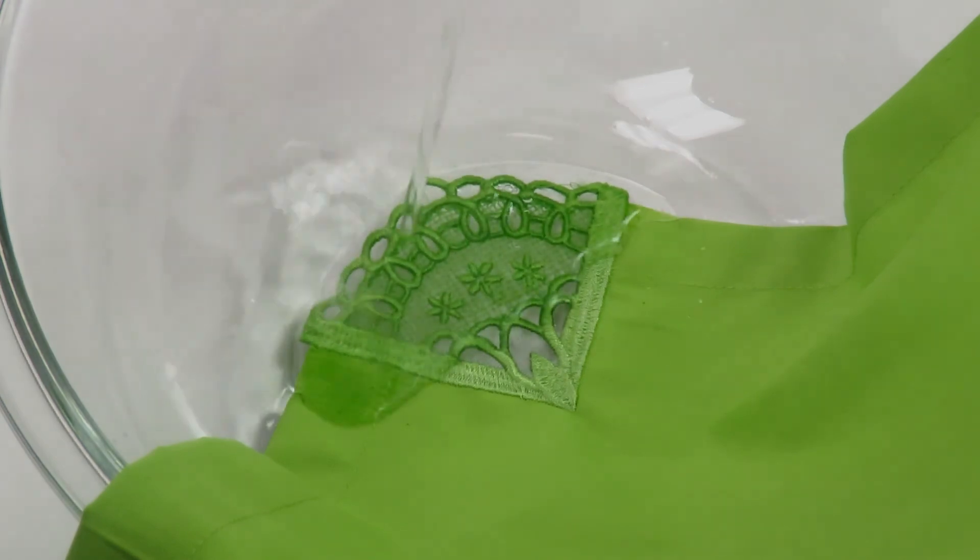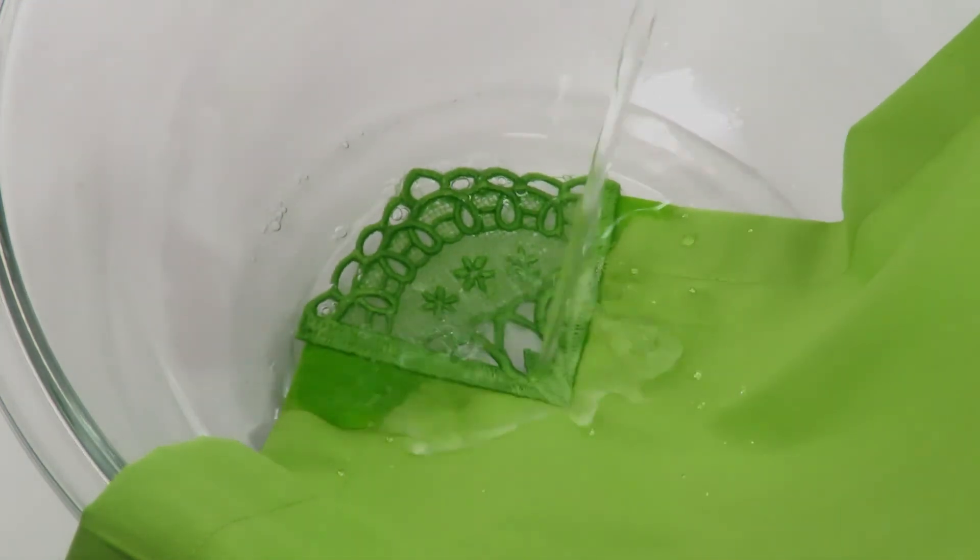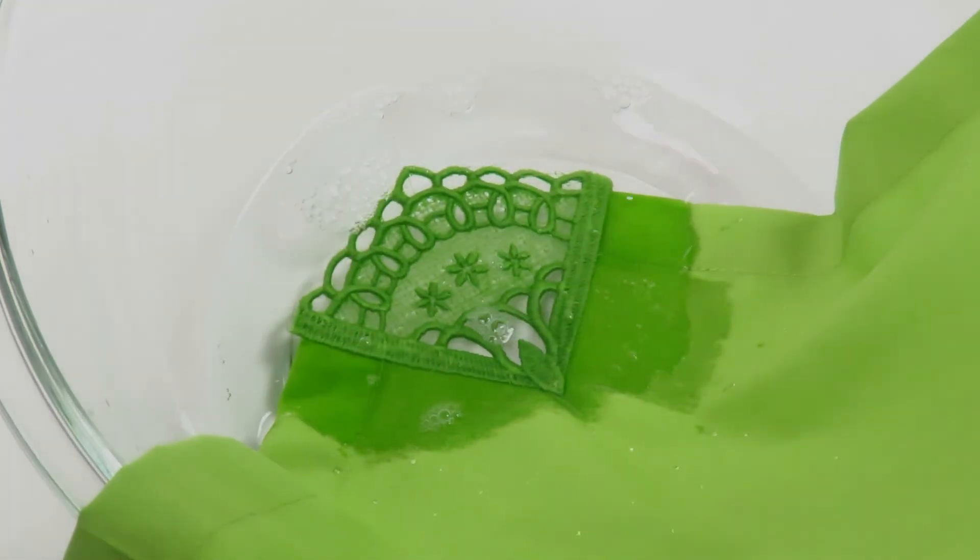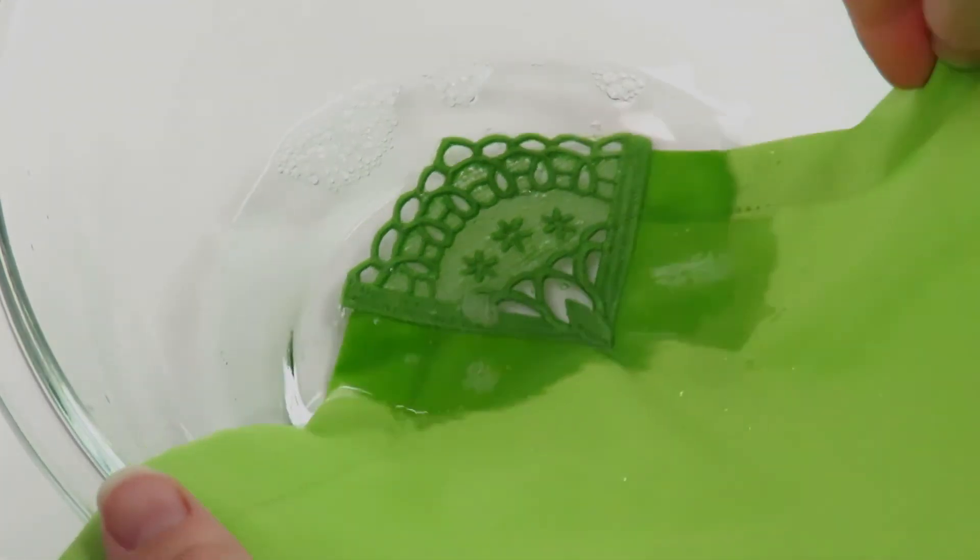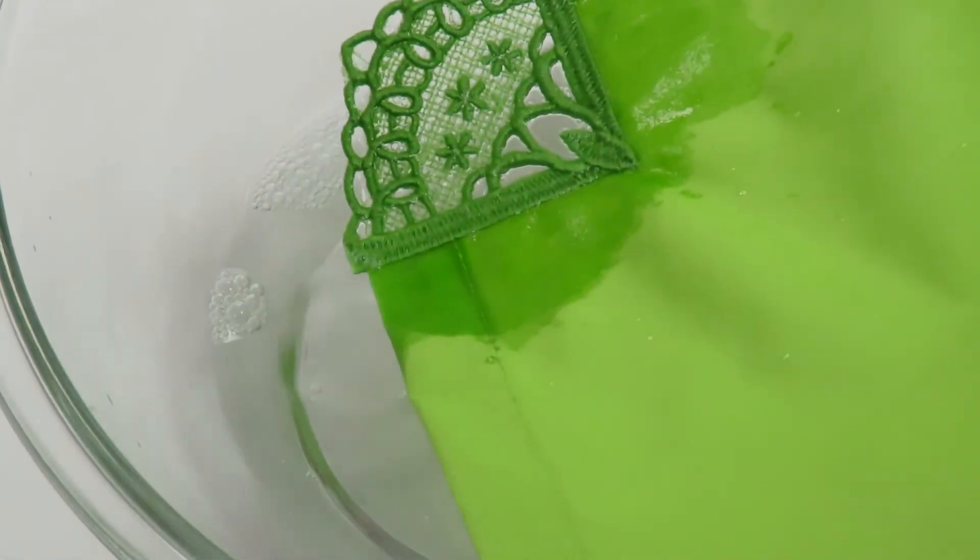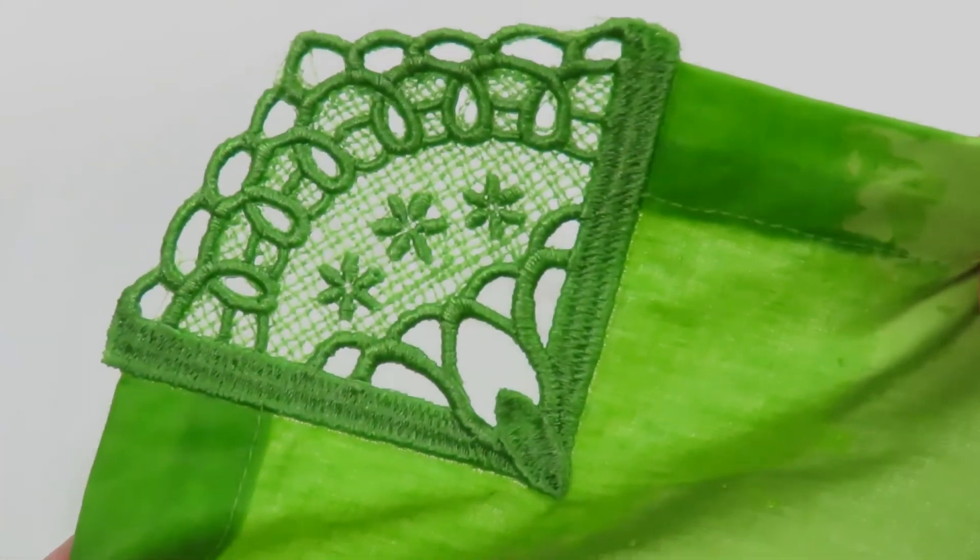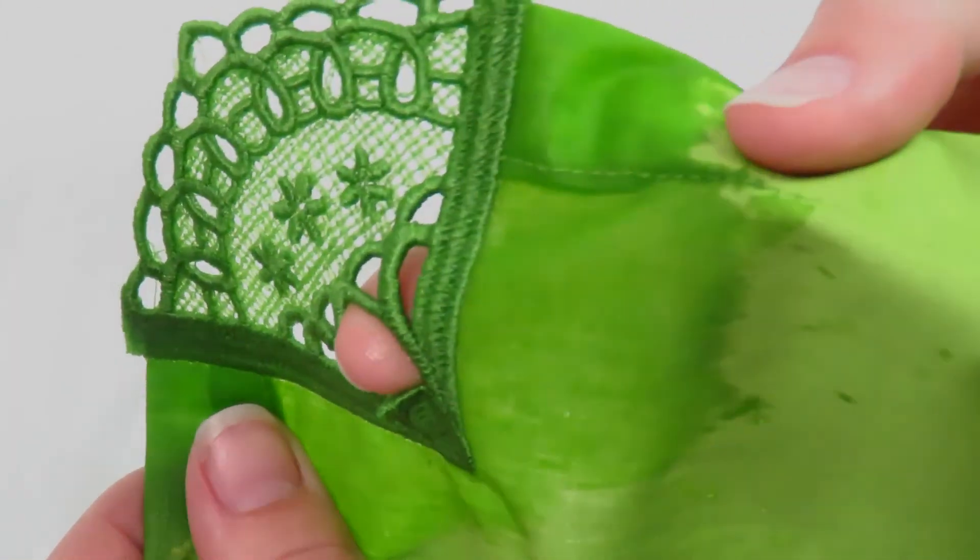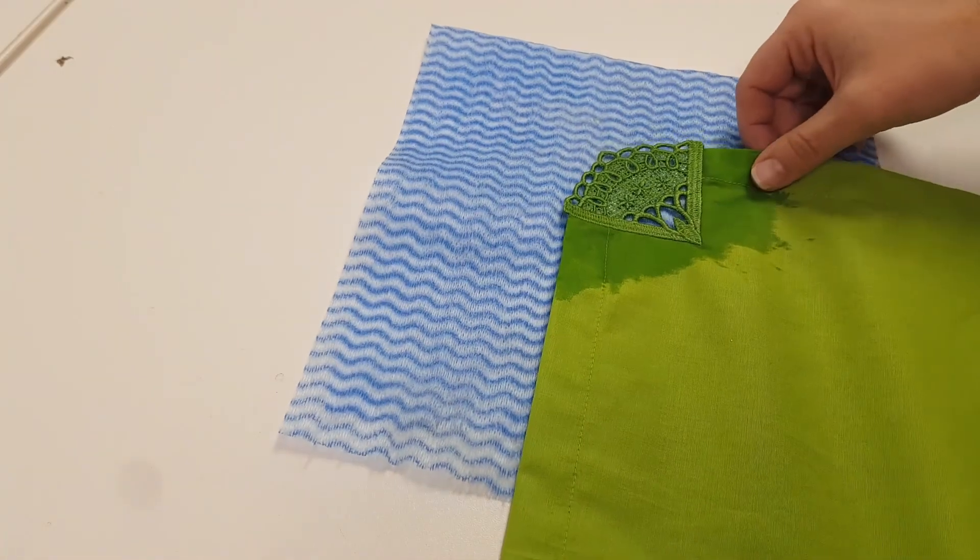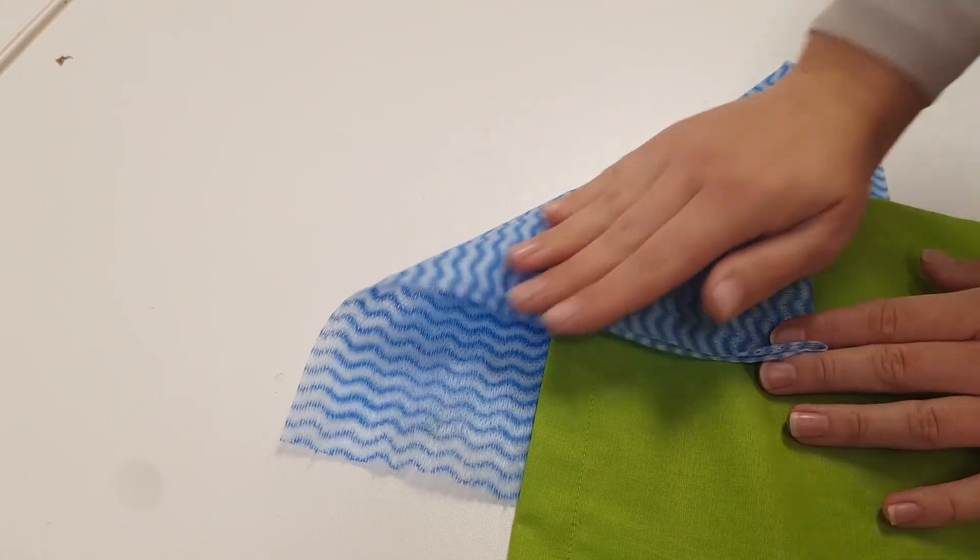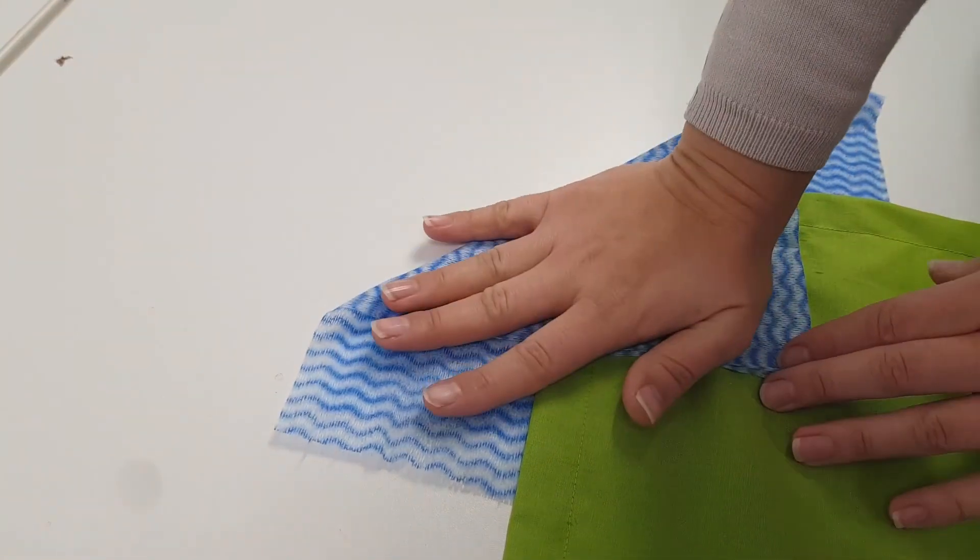Use a bowl to pour lukewarm water over the freestanding lace corners until the Avalon Plus has fully dissolved. If all the Avalon Plus did not dissolve, submerge the design back into the warm water. Place your serviette on a towel or cloth and press out any excess water. Leave the serviette and embroidery design to dry.